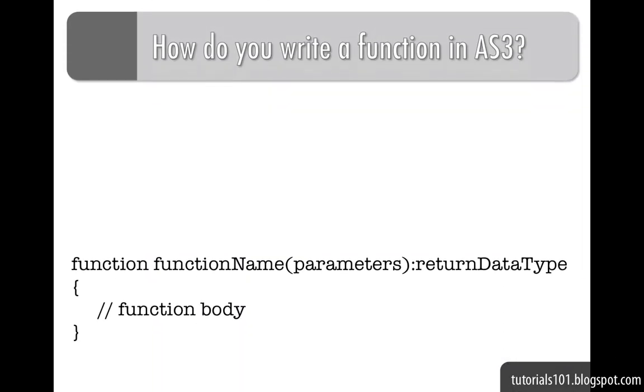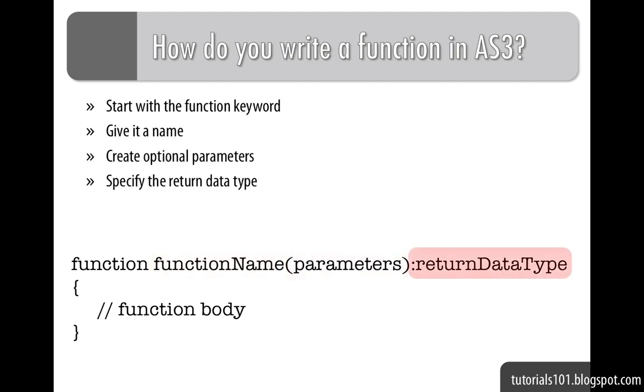Writing a function in ActionScript 3 involves using the function keyword, an author-defined function name, optional parameters, the return data type, and the function body enclosed within curly braces.